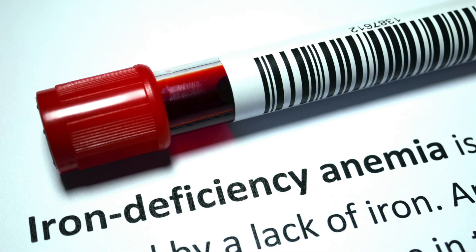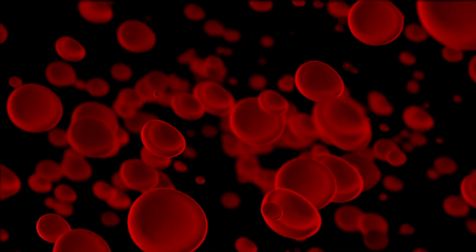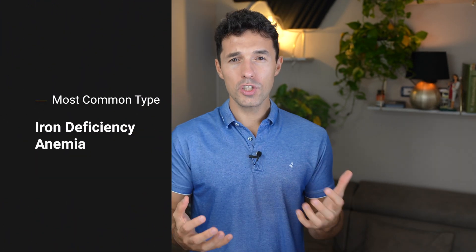In today's video you will learn about the most common signs, symptoms, and causes of iron deficiency anemia. Anemia occurs when there are not enough healthy red blood cells to carry oxygen to your body's tissues and organs. There are different types of anemia, but the most common type is iron deficiency anemia.